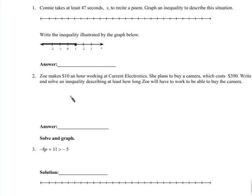Number one is a two-parter. Connie takes at least 47 seconds S to recite a poem, right? So that would be S is greater than or equal to 47. The least that S could be is 47.